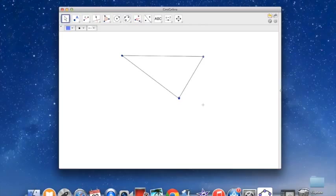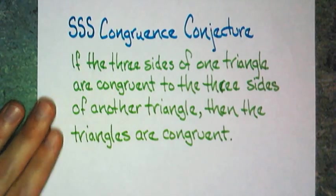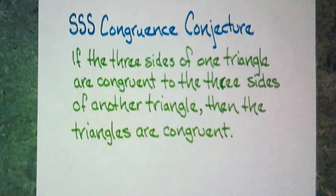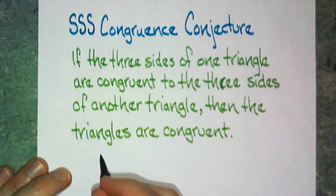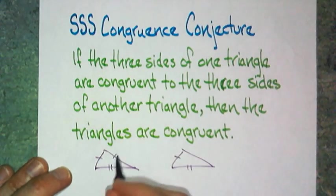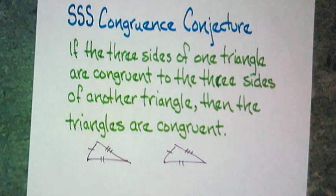There's only one triangle that I can make given three sides. So if I know that two triangles were made with the same three sides, then they need to be congruent. If three sides of one triangle are congruent to three sides of another triangle, then those two triangles are congruent. I'm going to write it as a conjecture — this is called the side-side-side, or SSS, congruency conjecture.